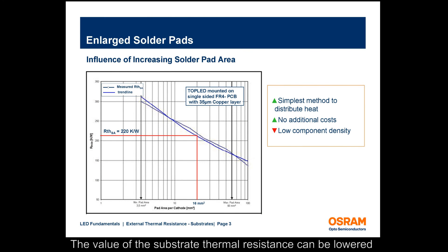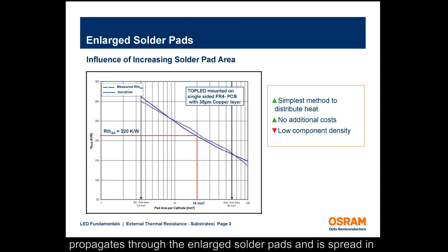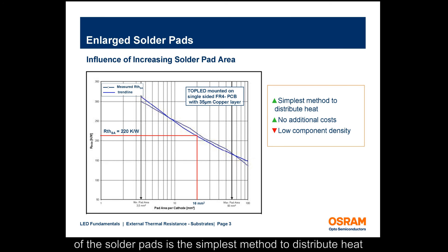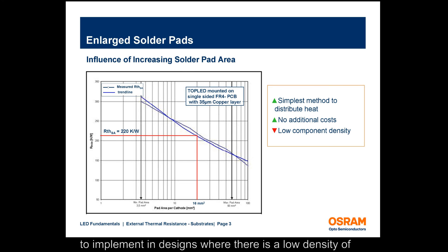The value of the substrate thermal resistance can be lowered by enlarging the solder pad areas for the LED. The heat propagates through the enlarged solder pads and is spread in the in-plane direction of the PCB. Increasing the surface area of the solder pads is the simplest method to distribute heat on a PCB with no additional cost. However, it is only possible to implement in designs where there is a low density of components.